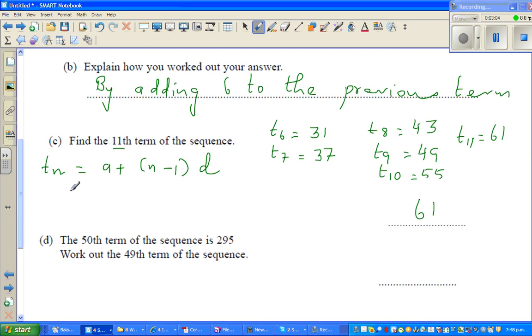In this case, you want to find the 11th term, so that is T11. So your n is 11, your a is 1 plus 11 minus 1 times d, which is 6, which is 1 plus 10 times 6, which is 1 plus 60, which is 61.